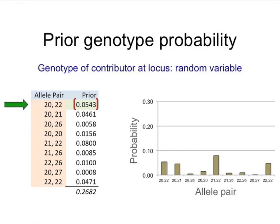What do you know about the genotype before you ever look at the data? What you sort of know is that there's a population prevalence that corresponds to how likely each allele pair combination is. At FGA there are about a hundred allele pairs listed in the table on the left, with allele pair frequencies — 2pq or p-squared — representing our prior belief of what a randomly selected person might have as their genotype.